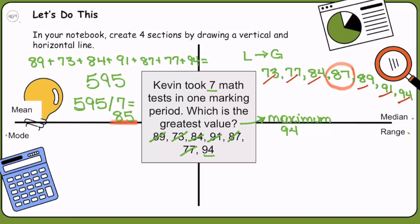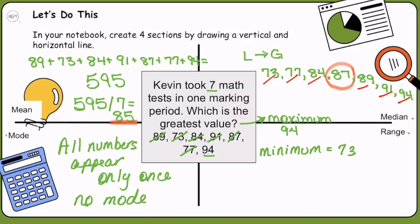Next, we have the mode. If we look at all of the numbers here, we can see all of the numbers only appear one time. All numbers appear only once. No mode. Lastly, we have the range. We're looking for the largest value minus the smallest value. Our minimum, or our smallest value, is 73. We just take that 94, which is our largest, and we subtract 73, which is our smallest. That gives us a range of 21.